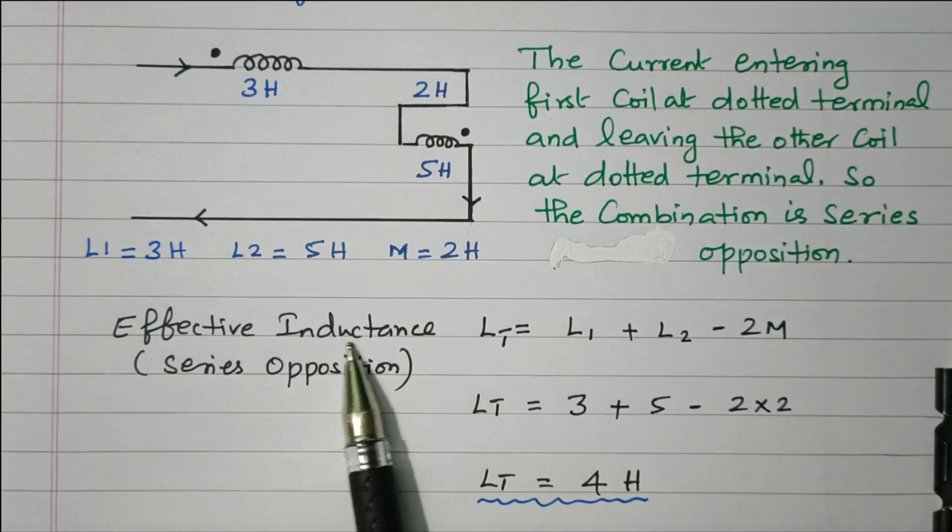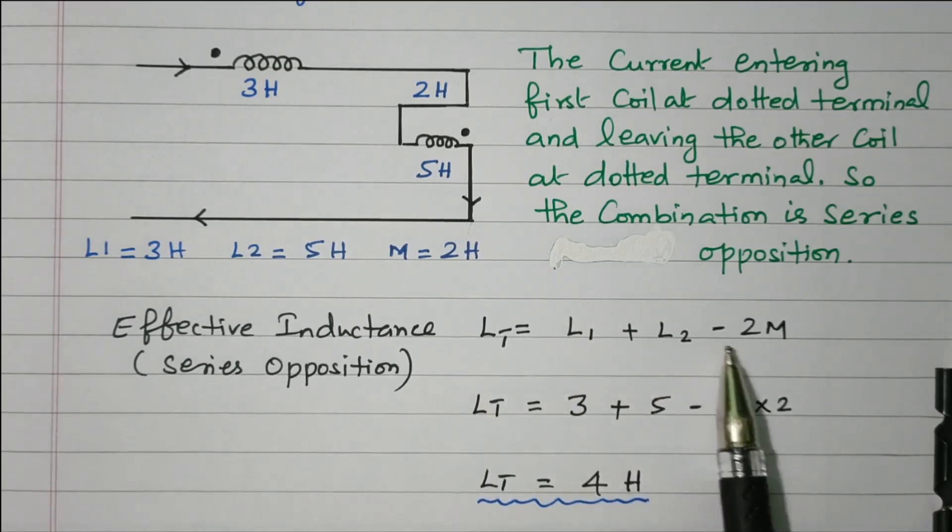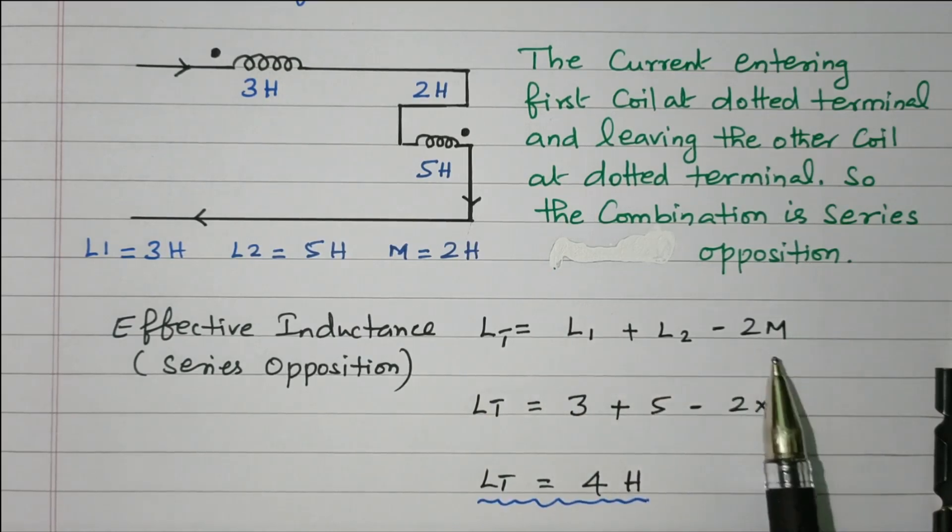The effective inductance in case of series opposition is: total inductance equals L1 plus L2 minus 2M. Series opposition means minus 2M. Series aiding means plus 2M.